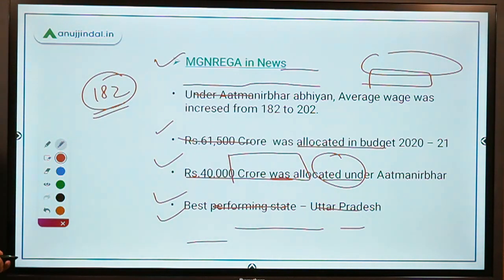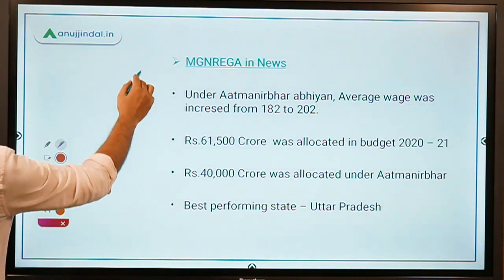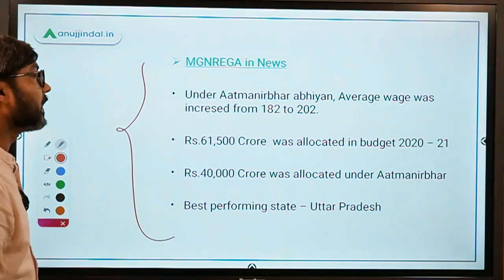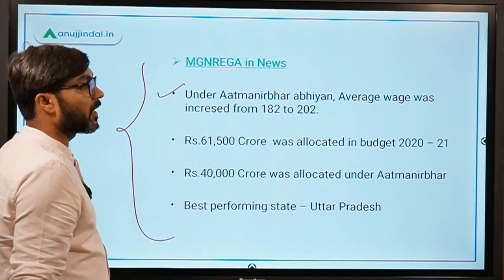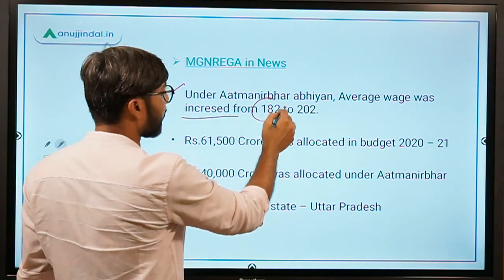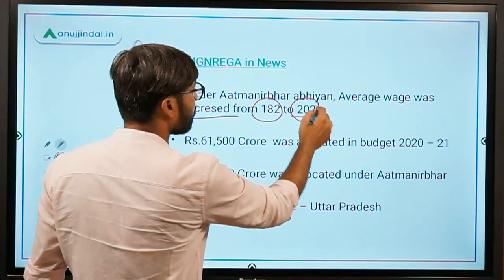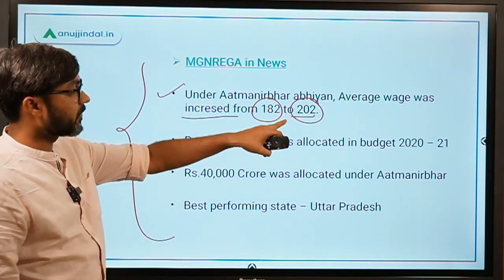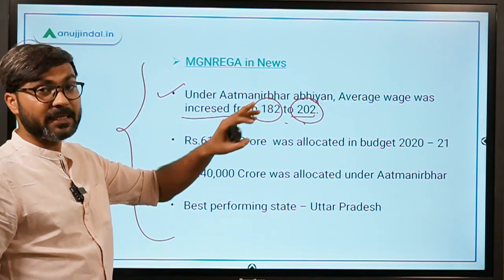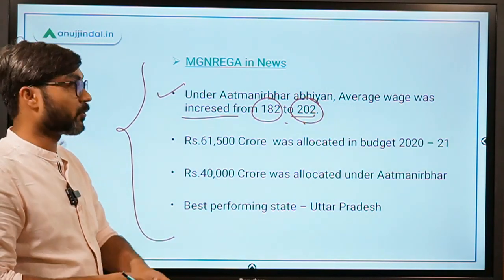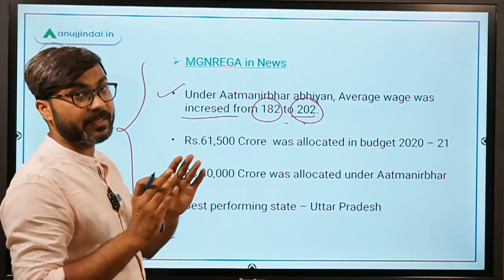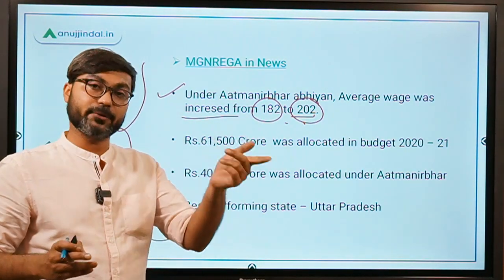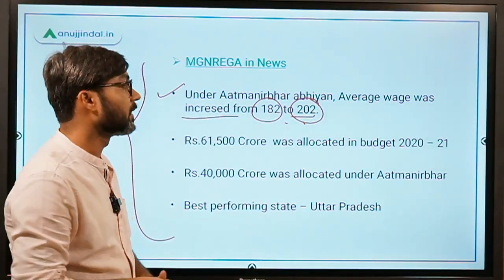These are some basic features of the act. MNREGS was in the news because under the Atmanirbhar Abhiyan, the average wage was increased from 182 to 202. Remember, this does not mean every state gets exactly 202 rupees — each state has a different wage rate, which is notified by the central government.